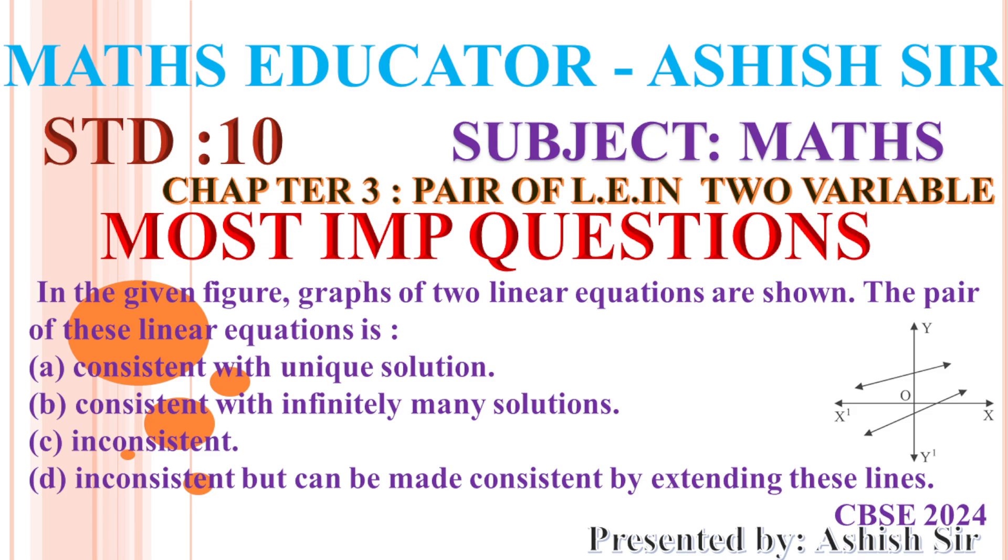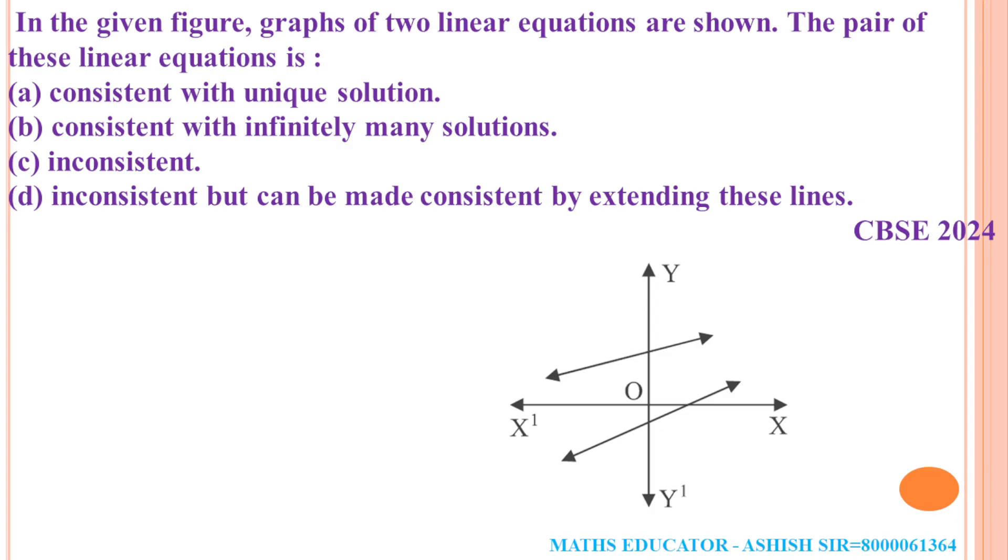The question is: In the given figure, graphs of two linear equations are shown. The pair of these linear equations is consistent with unique solution, consistent with infinitely many solutions, inconsistent, and inconsistent but can be made consistent by extending these lines. This is a CBSE 2024 question. Let's start the solution.